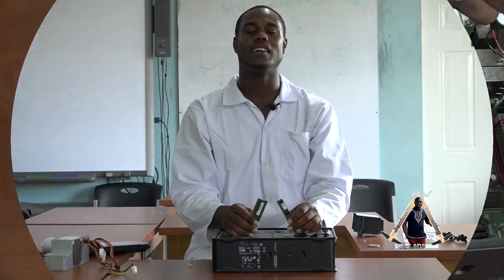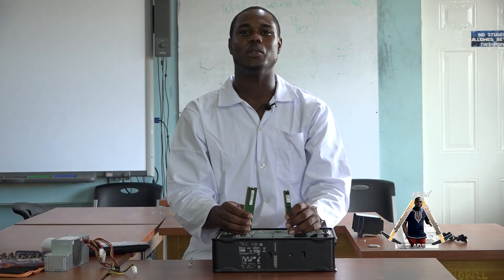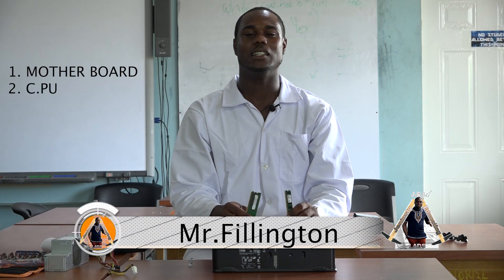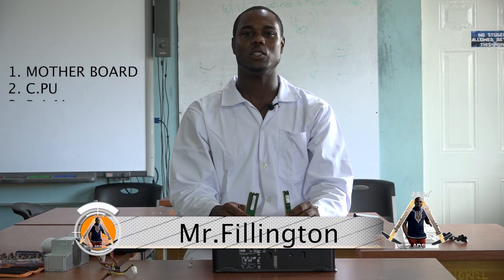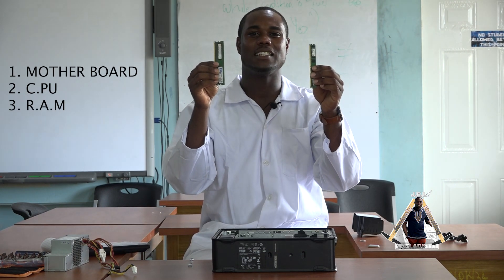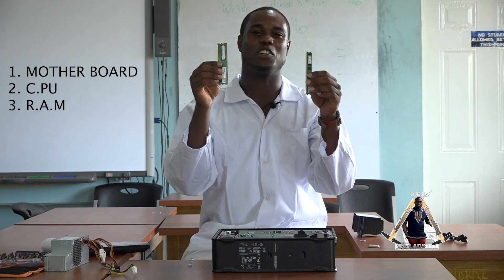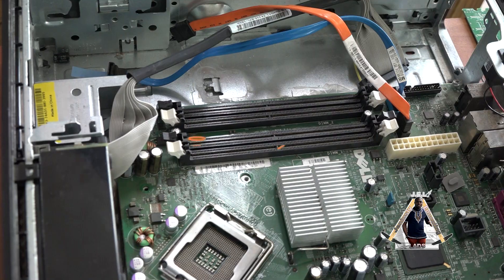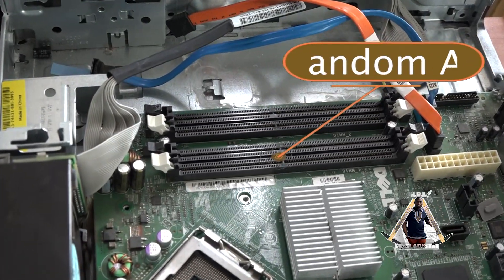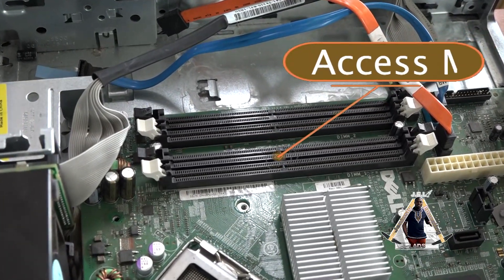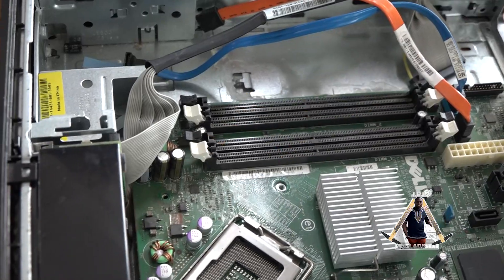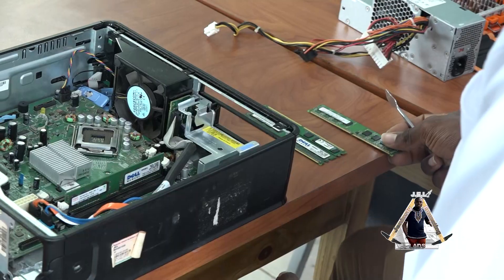We looked at the motherboard and the CPU earlier. Now we're going to look at the RAM. If you know what the RAM is, please leave your comment below. The RAM means random access memory, so for those who got it correct, congratulations.